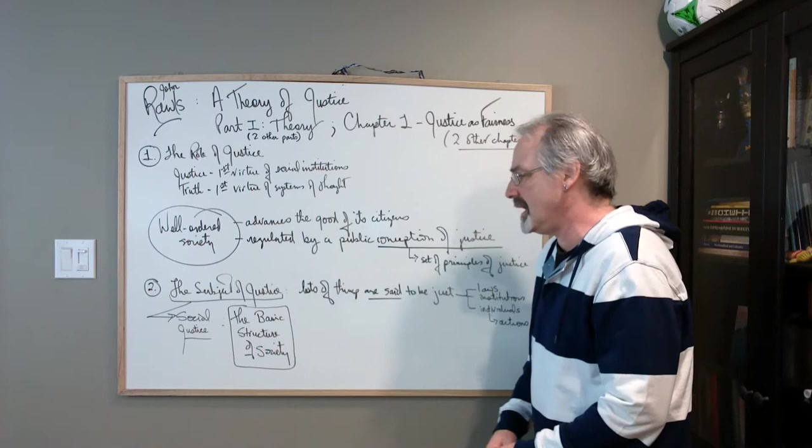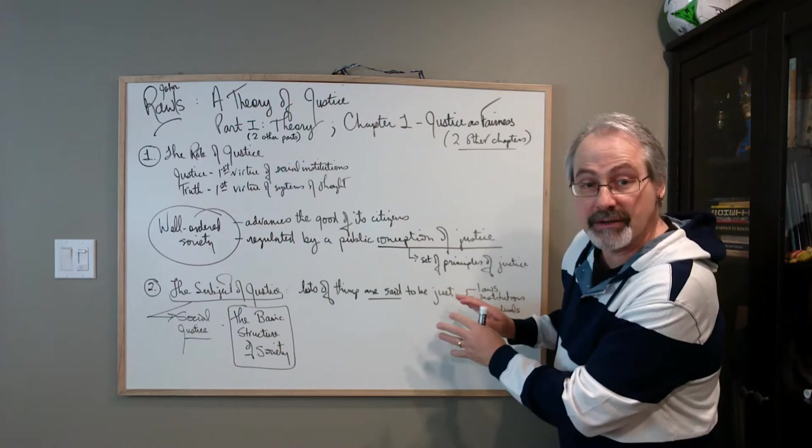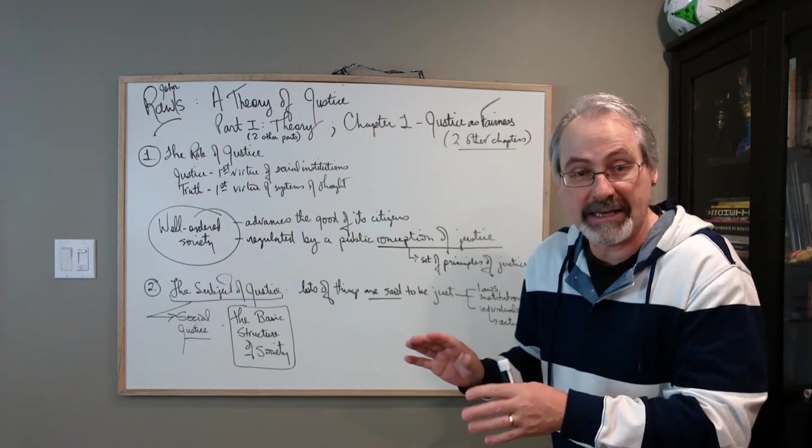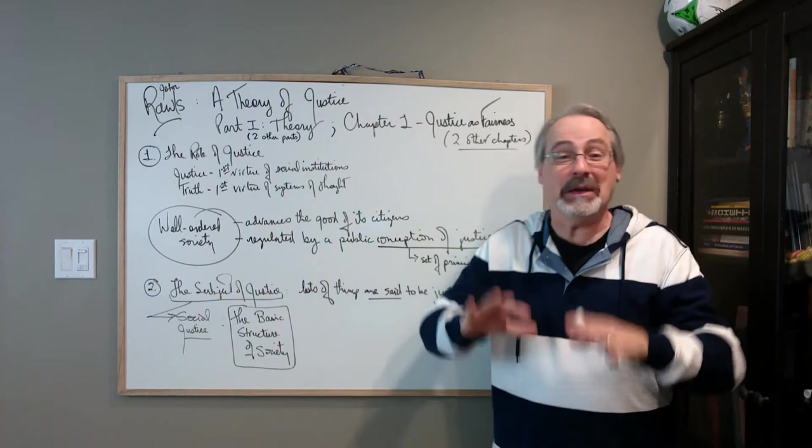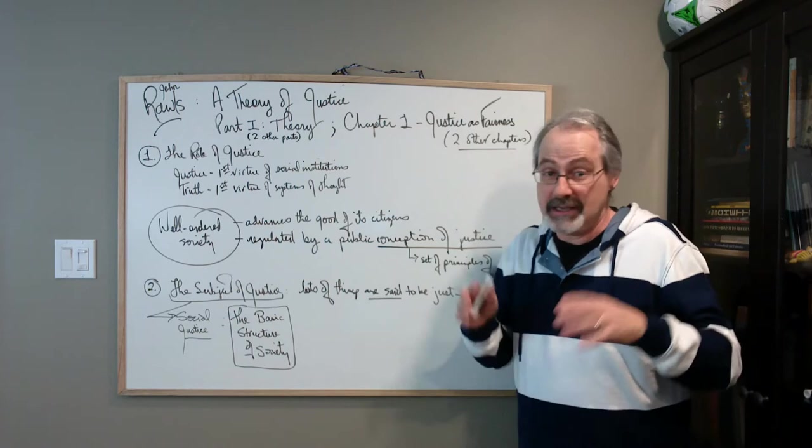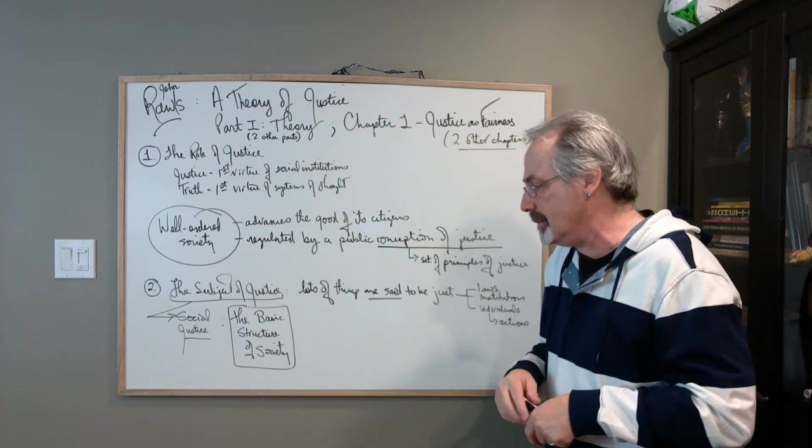So Rawls says, OK, so there's lots of things that are said to be just and Rawls is not doing everything. He's talking about a particular thing that he wants to talk about as being just. So he's not talking about individual human actions and dispositions and things like that. So Rawls, again, is not doing, as I said in a previous video, Rawls isn't doing everything. He's not doing all of political philosophy and moral philosophy and everything. No, he is, remember, he's talking about a very limited domain.